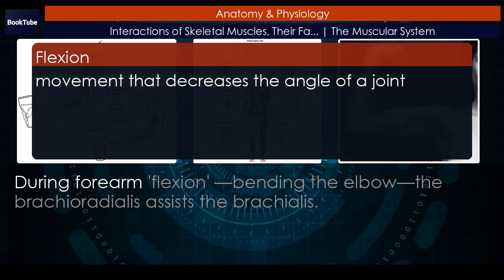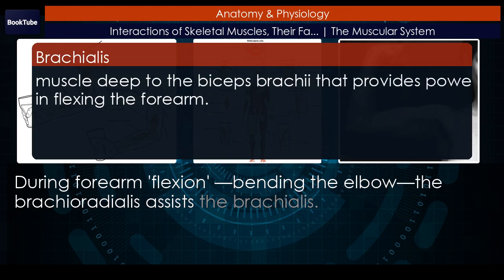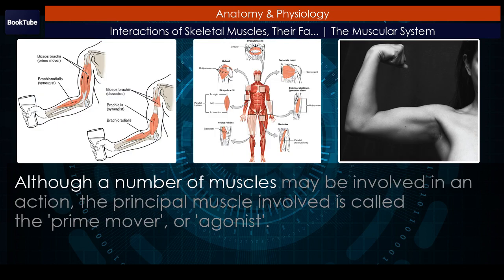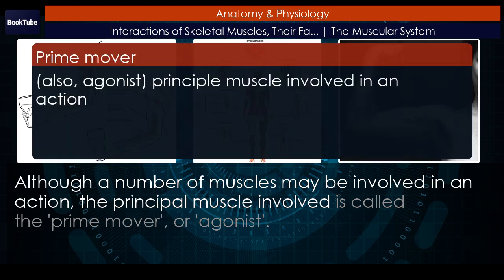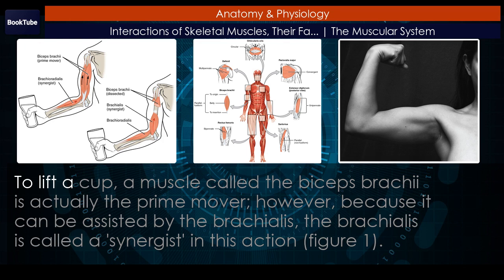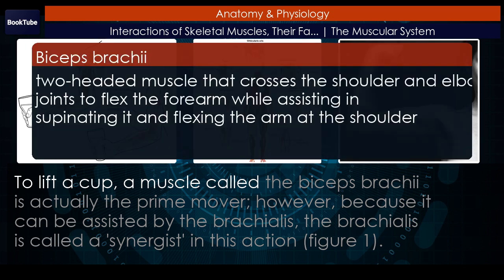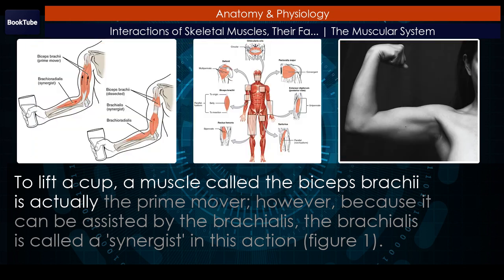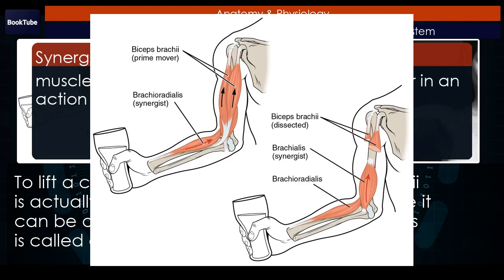During forearm flexion — bending the elbow — the brachioradialis assists the brachialis. Although a number of muscles may be involved in an action, the principal muscle involved is called the prime mover, or agonist. To lift a cup, a muscle called the biceps brachii is actually the prime mover. However, because it can be assisted by the brachialis, the brachialis is called a synergist in this action.